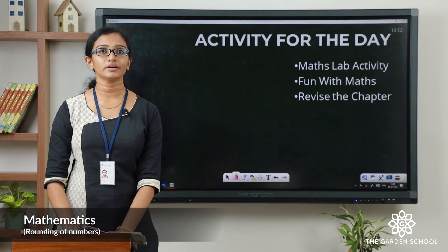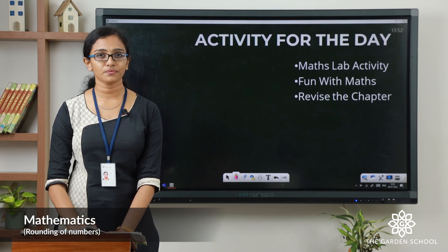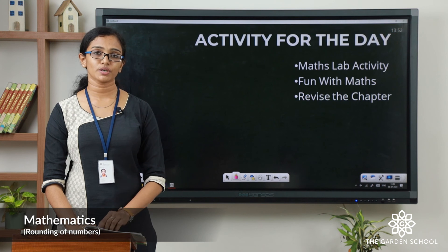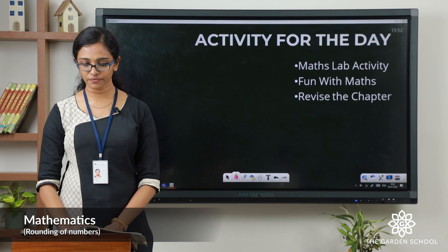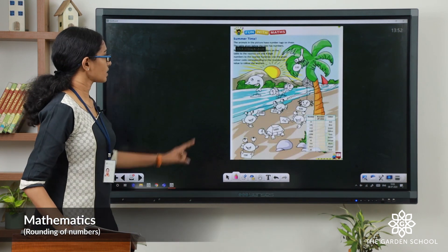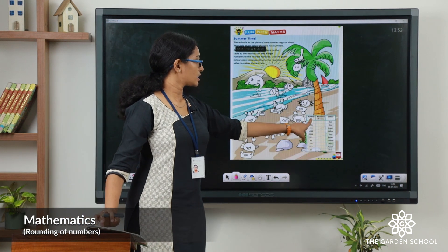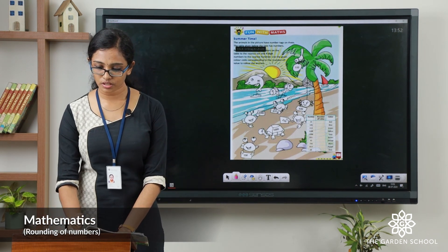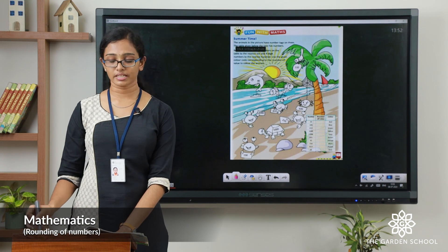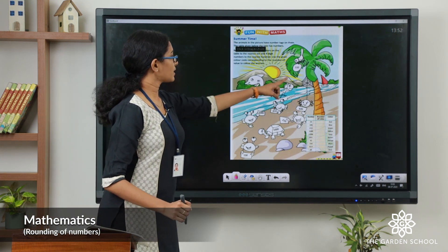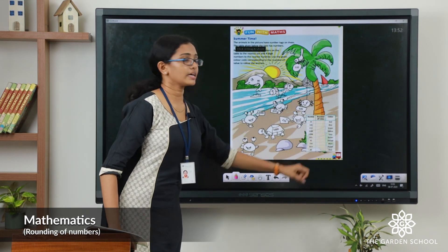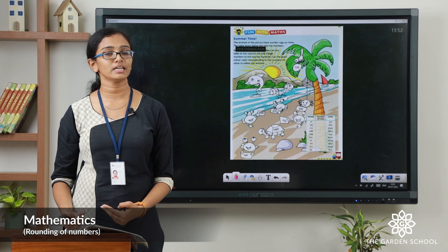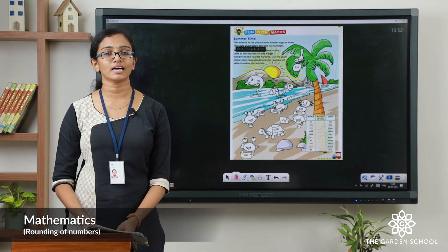So today we talked about rounding of numbers. I hope the concepts are clear to you. Now as an activity for the day, you can do a maths lab activity which is given in page number 14 of your textbook. And in page number 15 you can see the heading 'Fun with Maths'. Some numbers are given and you have to write down the numbers rounded off to the nearest 10 and nearest 100 in the box. You can find the same number tags in the picture, and a colour code is given — you have to colour the picture according to the colour code. Once you are done, please take a picture and send us. We will meet in the next class. Bye.